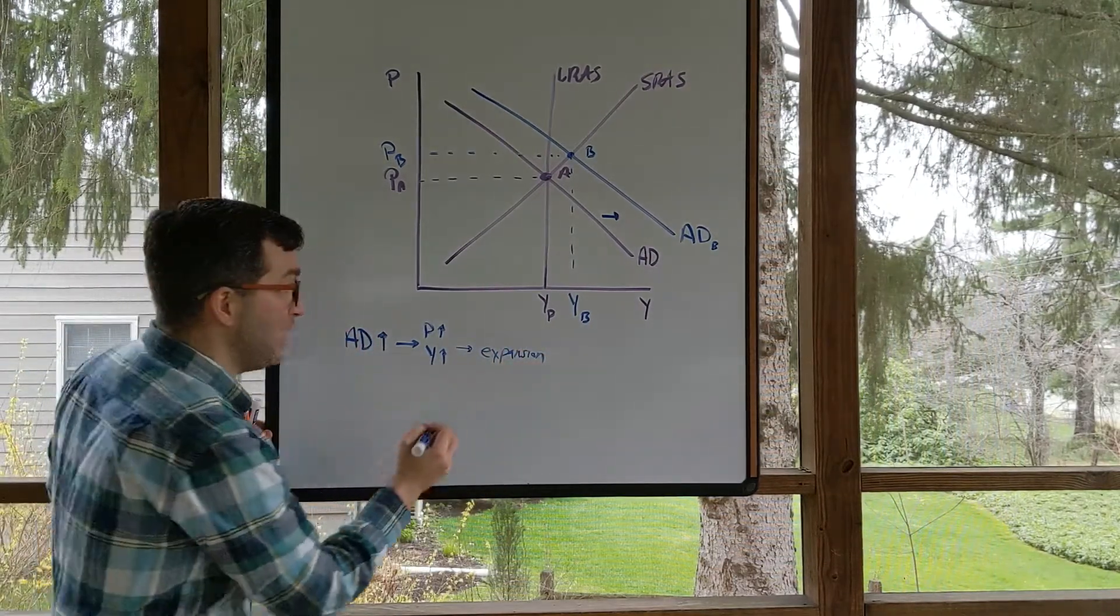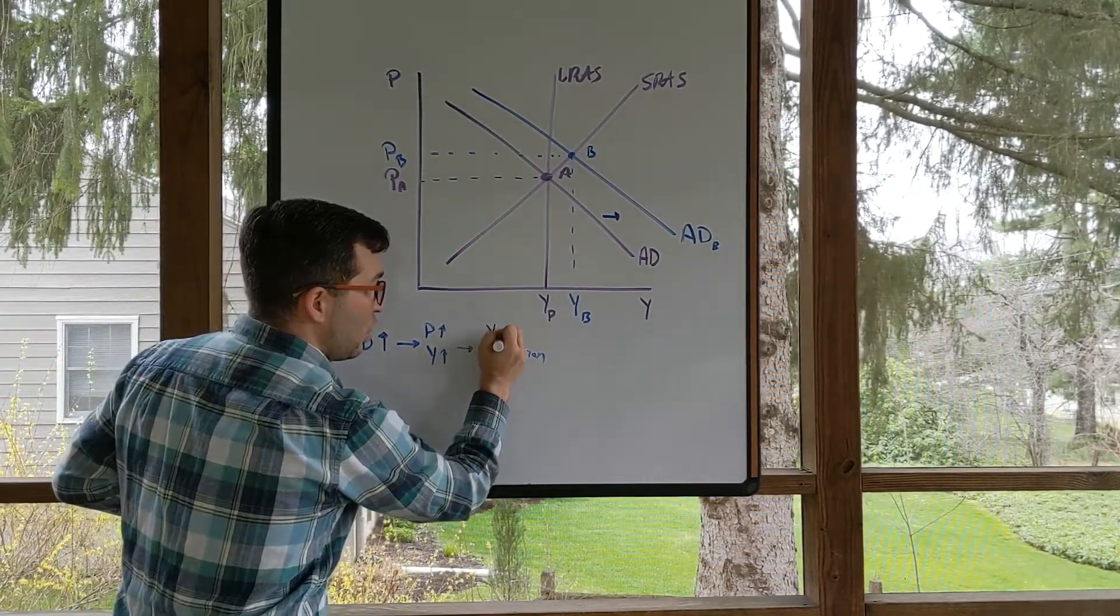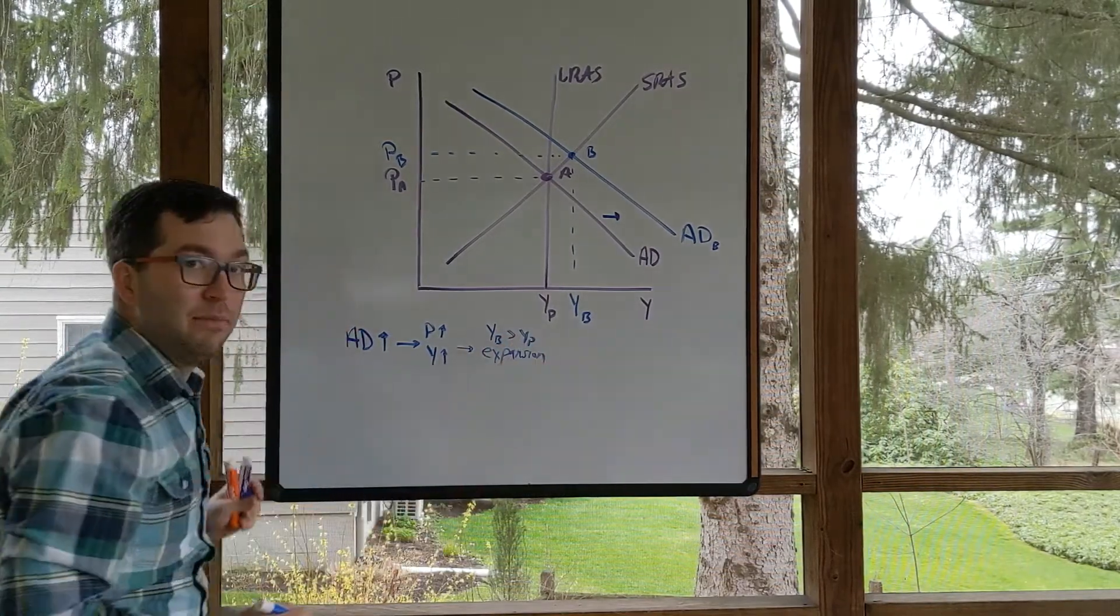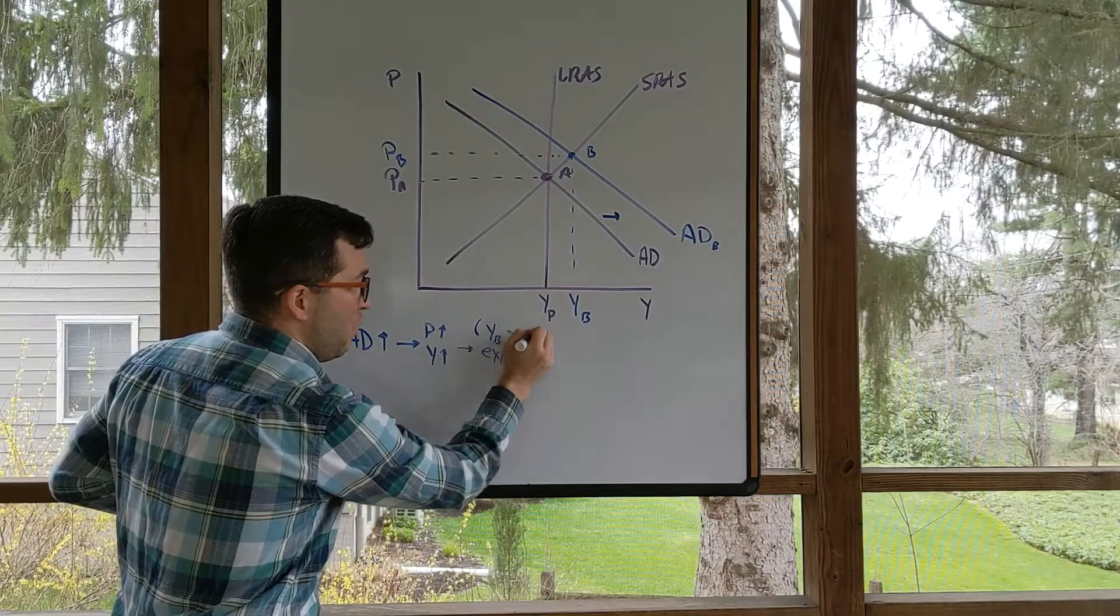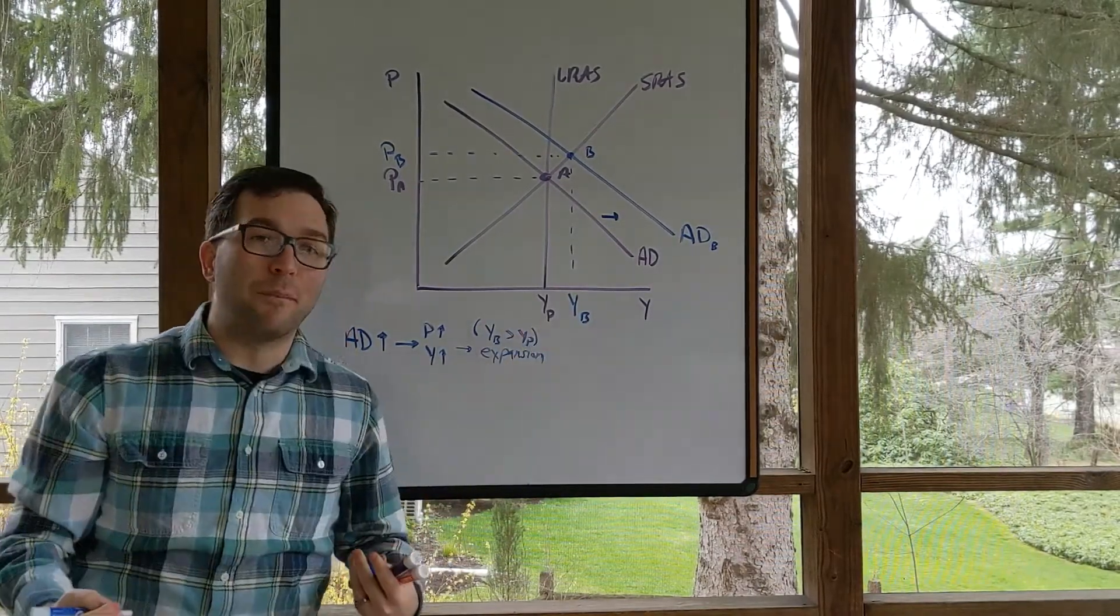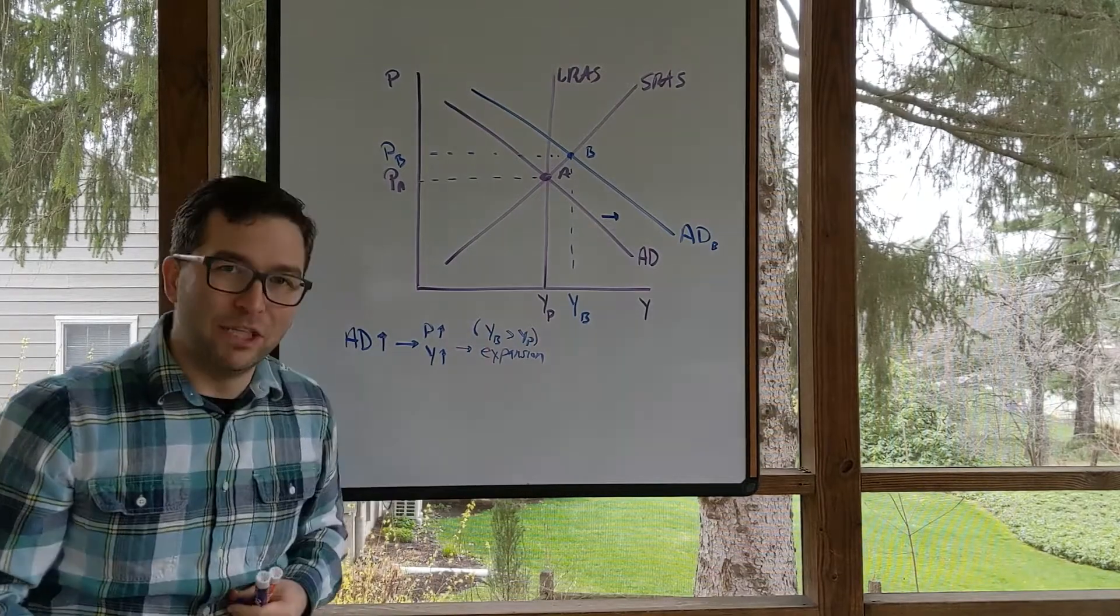This is an expansion because we see that our current level of output is greater than our potential GDP. This is the important part, showing this output gap. How far are we away from potential GDP? We're in an expansionary period.